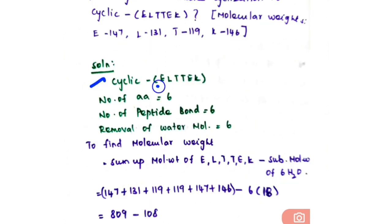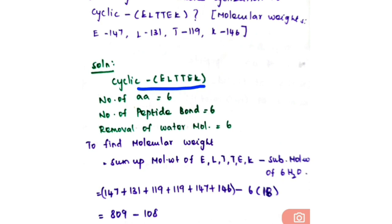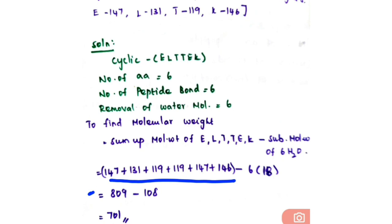In this problem, the cyclic peptide is E-L-T-T-E-K, so the number of amino acids is 6. There will be 6 peptide bond formations and removal of 6 water molecules. Summing the molecular weights: E = 147, L = 131, T = 119, T = 119, E = 147, K = 146, giving a total of 809. Then subtract 6 × 18 = 108.